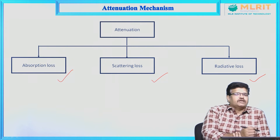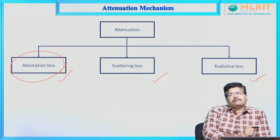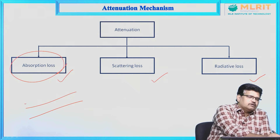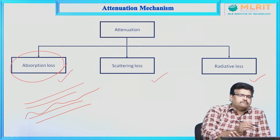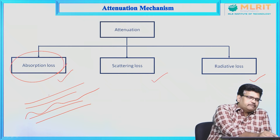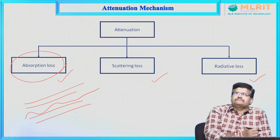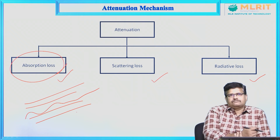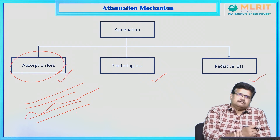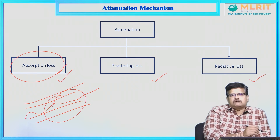Absorption loss occurs due to atomic defects in the fiber material. As the light signal propagates in the core area, due to some atomic defects in the fiber composition material, the light signal may be absorbed. Finally, the signal quantity decreases and we experience losses. Impurities present in the material also lead to absorption loss.